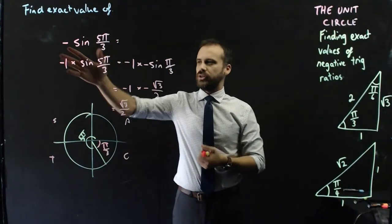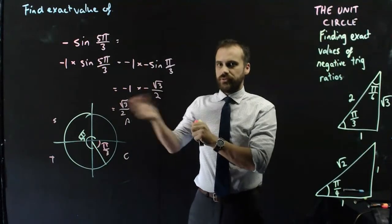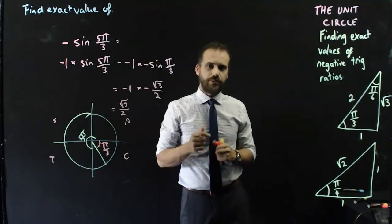So, if you've got a negative ratio, just treat it as a negative 1 out the front, work through it as you normally have, and then bring it back in and it'll swap that sign around.